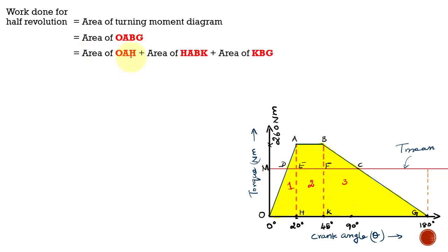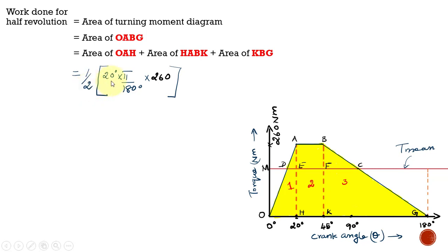We split the entire area OABG into three different sections: the first is a triangle OAH, the second is a rectangle HABK, and the third is a triangle KBG. We can now find the area of these individual regions. For the first region, it is a triangle, so area = ½ × base × height.